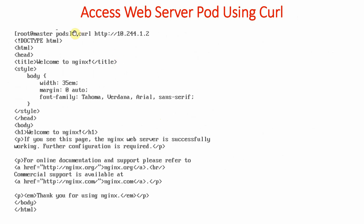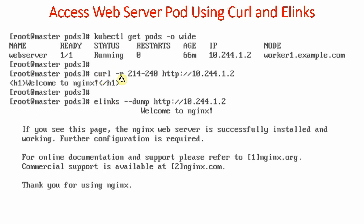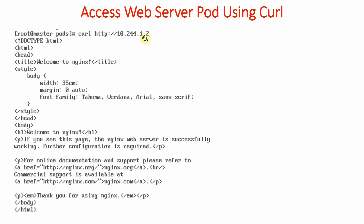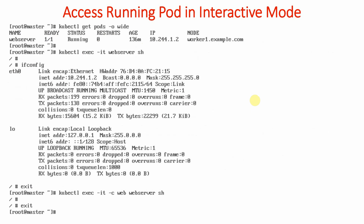If you do not use 'curl -r', and just run 'curl http://10.244.1.2', it shows so much output. We were able to access the pod successfully using both curl and elinks, and we were able to successfully launch the pod. In the next video, we will look at how to access the pod in interactive mode.